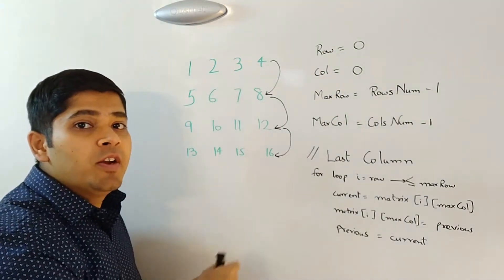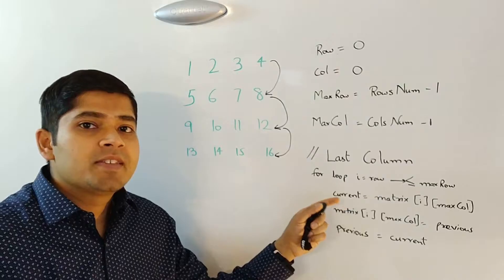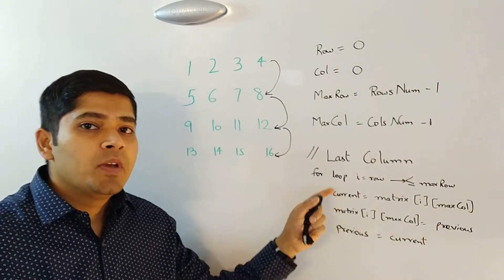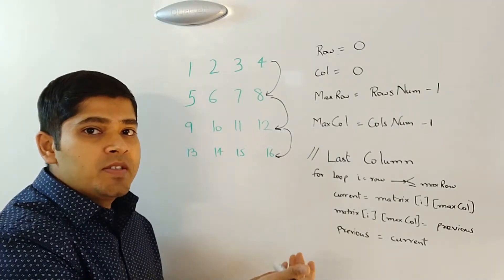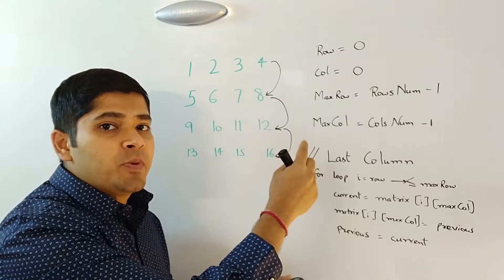Next, we move on to the last column. So in this case, our for loop runs from the variable's row to max row. So what we are essentially doing again is moving 4 to 8's position.